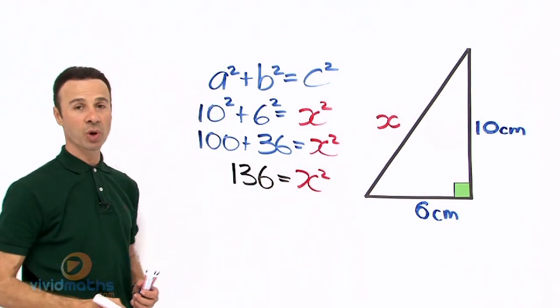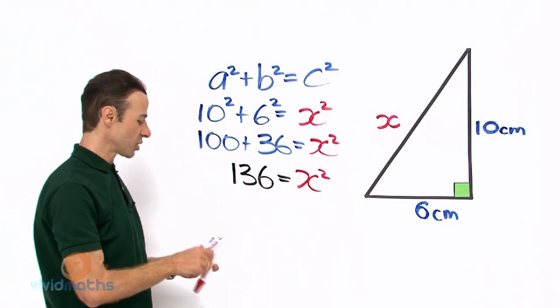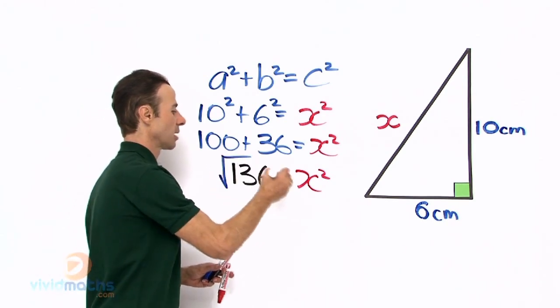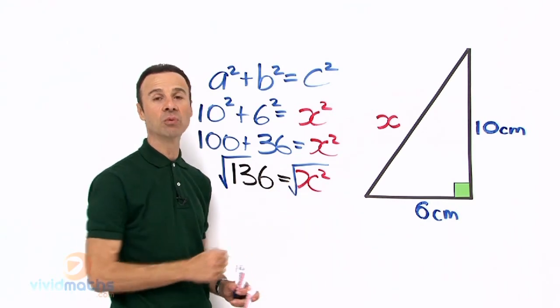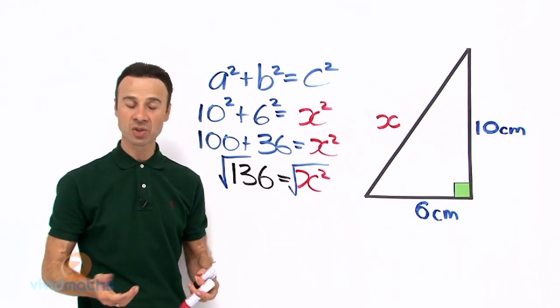Now let us square root both sides. If we were to square root this side and square root this side, now remember when we square root an x squared it reverts back to just being x.